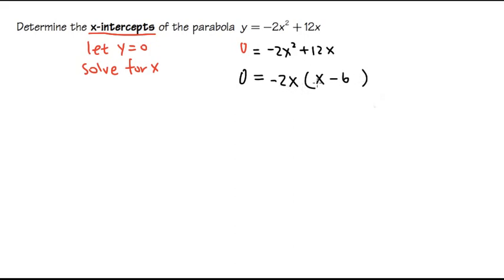Negative 2x times the parentheses x minus 6. Well, this is equal to 0. As we can see, a product of two factors is equal to 0, so we can just make the first factor, negative 2x, equal to 0.